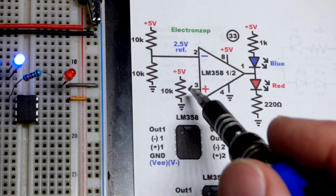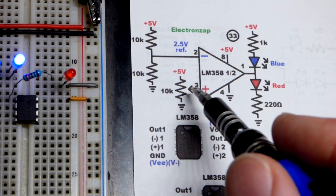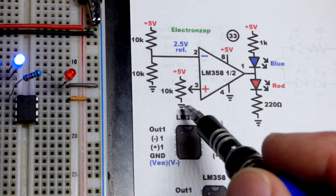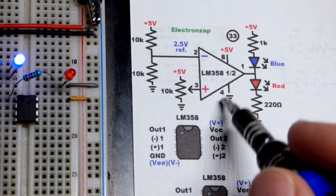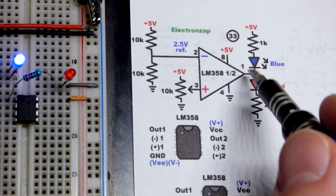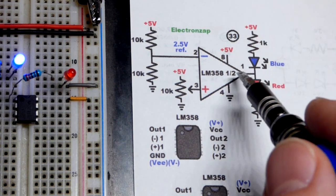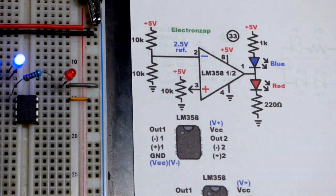Now, when we dropped below 2.5 volts, lowered the trim pot less than halfway, then we had a low output, which probably did connect to ground really good, 0 volts. So we had 5 volts across the blue LED, and it lit up.